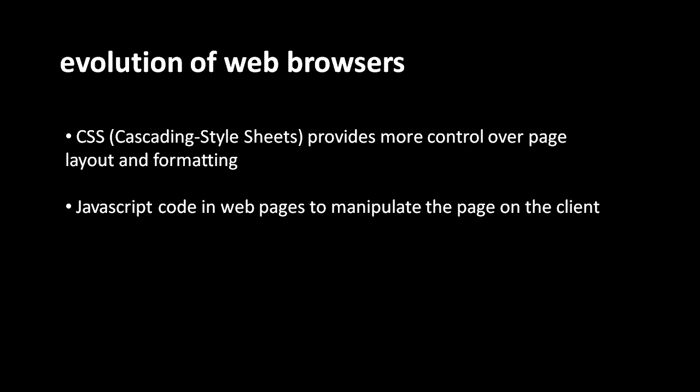The reason that web pages typically look better today than they did in the early days is not just because designers have gotten more competent — it's because the web browser itself has become more capable. Over the years, web browsers have added features that allow authors to create more dynamic, more interesting pages. The biggest two features added to this end are CSS and JavaScript. CSS, short for Cascading Style Sheets, is a mechanism that allows page authors more control over the layout and formatting of the page — precisely how everything is arranged and how it looks.